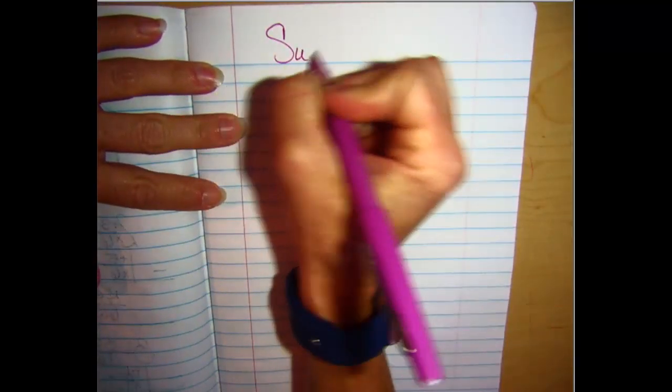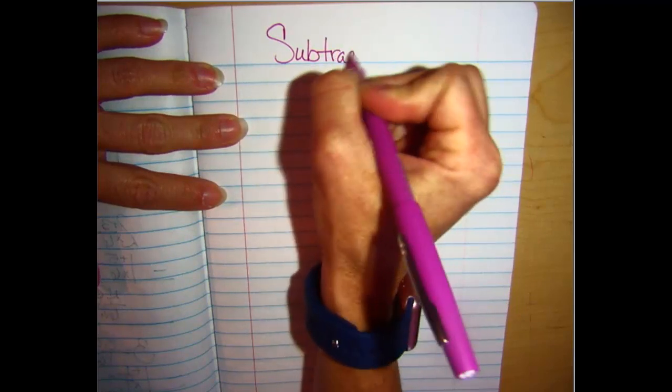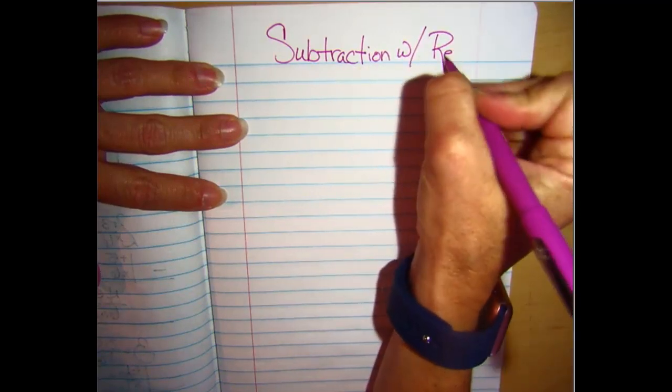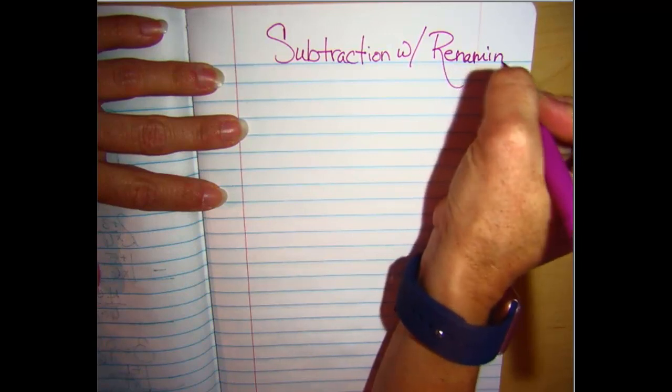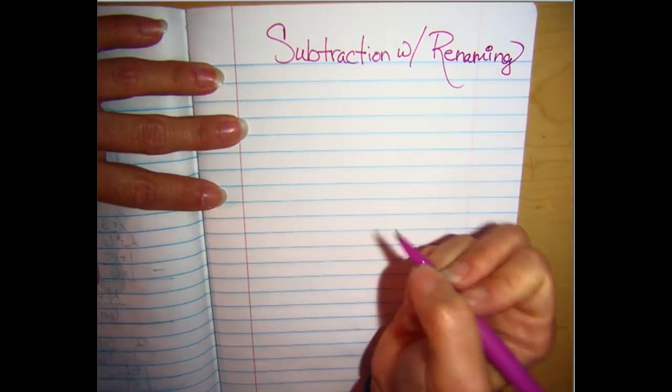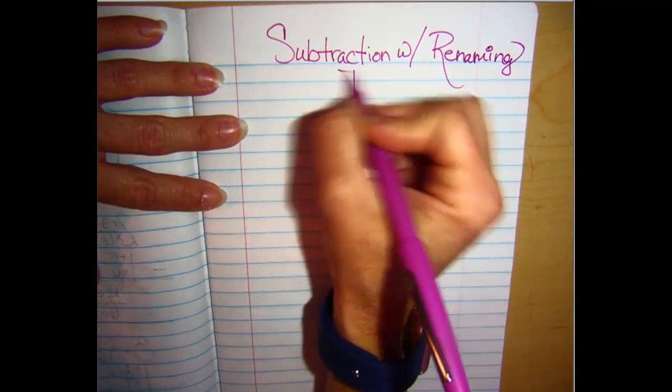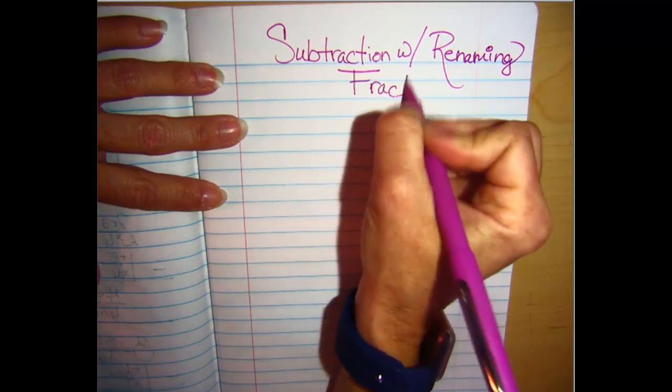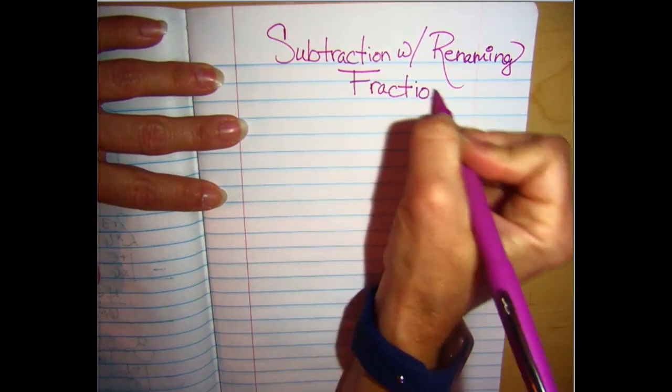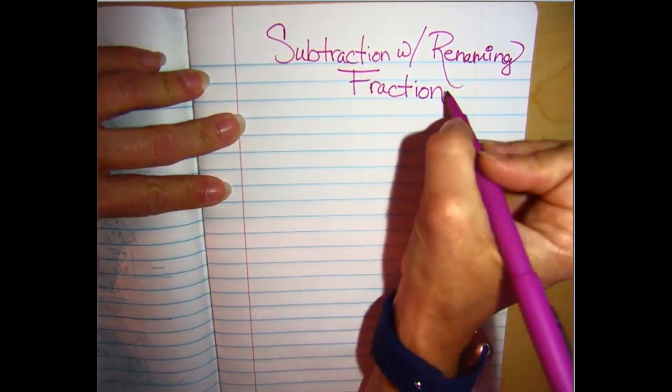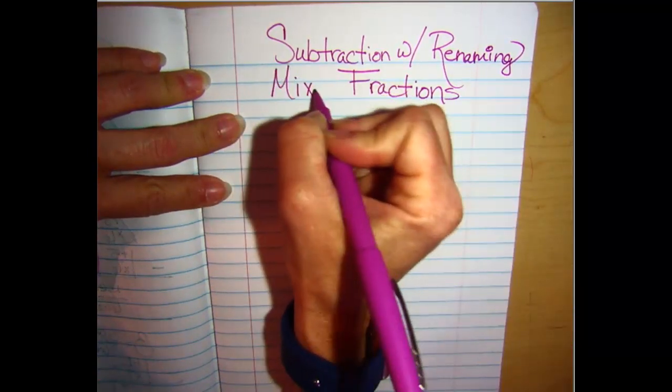So we're going to look at a different option for doing subtraction with renaming. Yesterday I showed you one way and we practiced it. Today I'm going to show you another way. It's like showing you all the shoes in the store. If this pair of shoes works for you, then run with it. As long as you get to the right answer at the end of the race, we're okay. Mixed fractions with renaming, as you saw yesterday, is a little tricky, right?